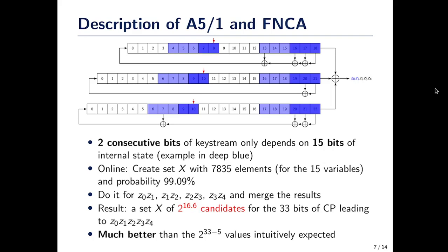To obtain the keystream, you XOR the last bit of each register. In the Fast Near Collision Attack against A5-1, what's going on is that you're searching 15 bits of internal state knowing only two consecutive bits of the keystream. The 15 bits you're searching are shown in deep blue, and they correspond to the first two bits of keystream that will be output. When you run the self-refine method, you obtain a set X of 7,835 elements for the 15 variables with the claimed probability of good value being more than 99%.